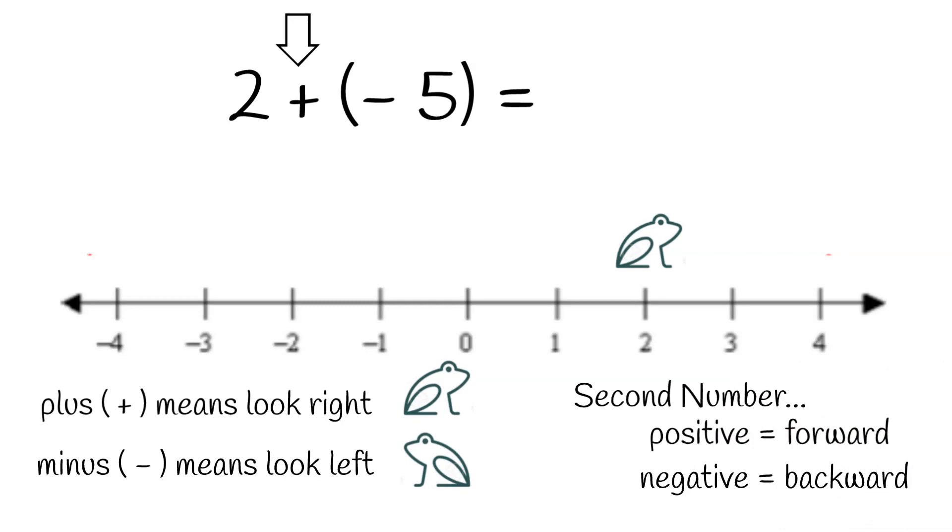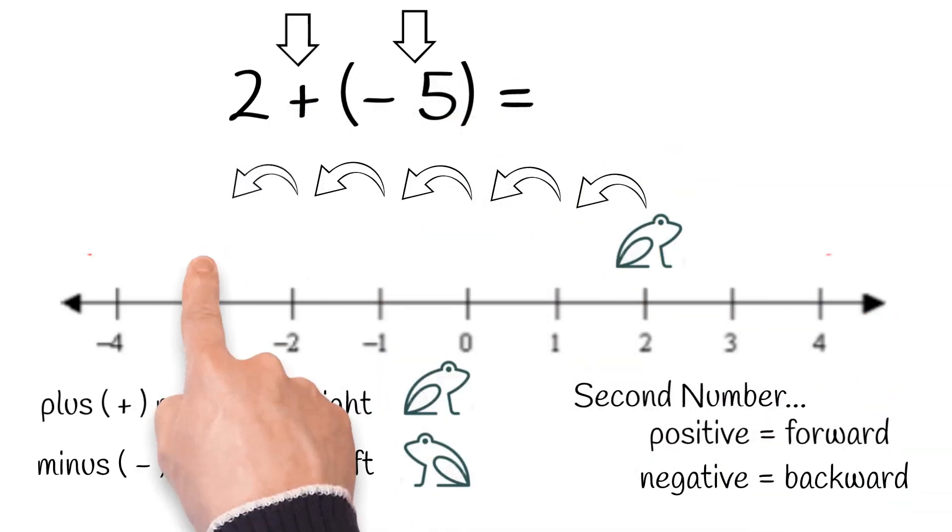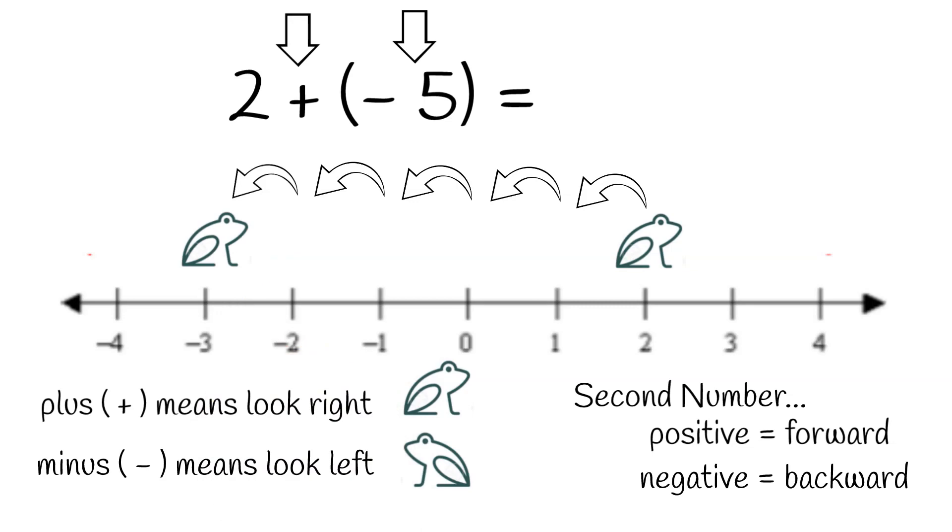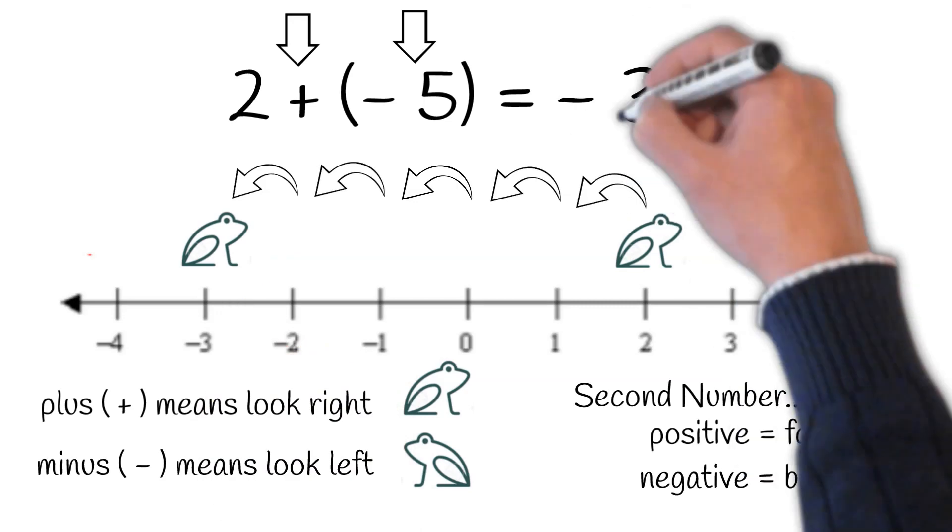Since our second number is negative 5, our little frog is going to move backward five spaces. Since he landed at negative 3, that's our answer. 2 plus negative 5 equals negative 3.